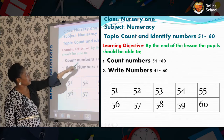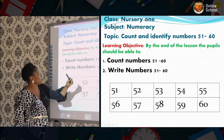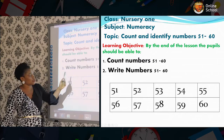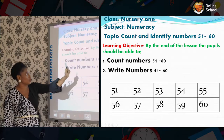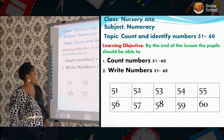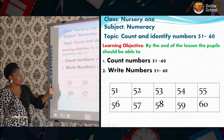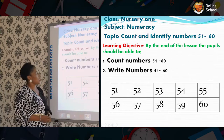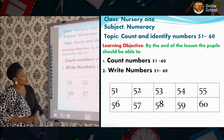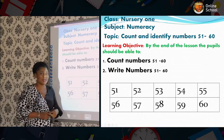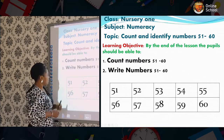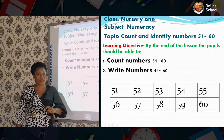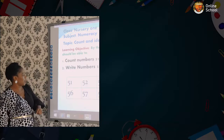We are going to learn the objectives. By the end of this lesson, you're going to count your numbers 51 to 60. And you are going to write numbers 51 to 60. And before we continue, we need to count our numbers 51 to 60 and identify them as well.